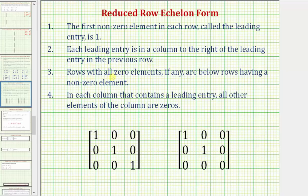Three, rows with all zero elements, if any, are below rows having a non-zero element. Four, in each column that contains a leading entry, or one, all other elements of the column are zeros.